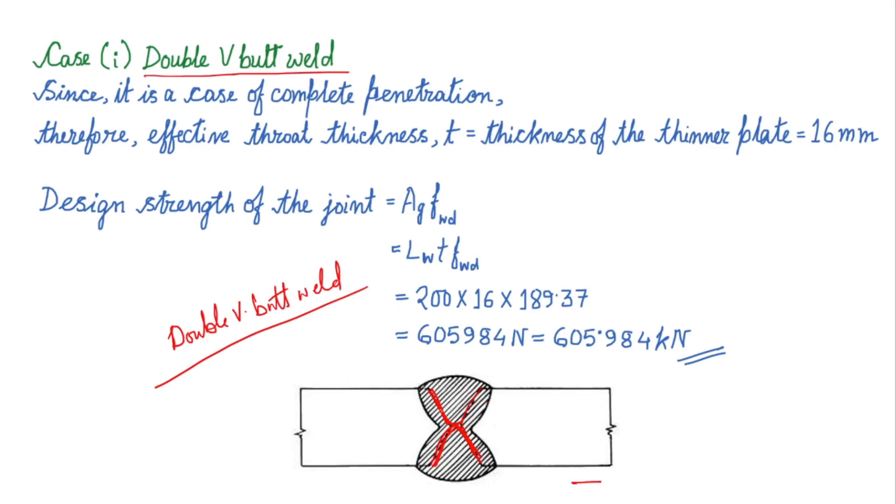Because 2 Vs have been formed from the top as well as from the bottom, this type of welding is done from the two sides, once from the top first the welding is done and then from the bottom also the welding is performed. So since it is a case of complete penetration, means we have performed the welding from both sides, the full penetration will take place.